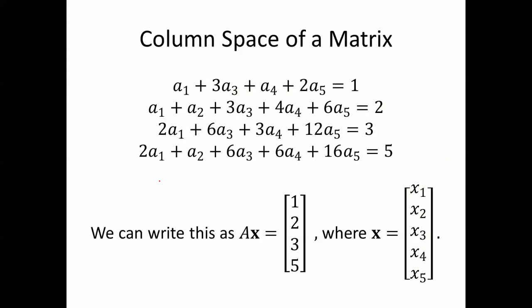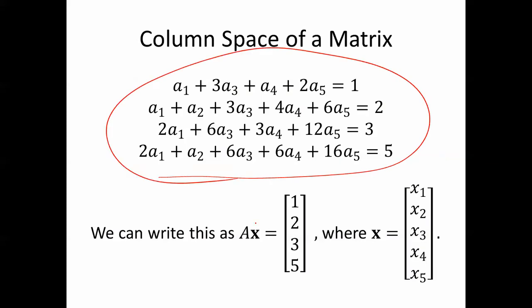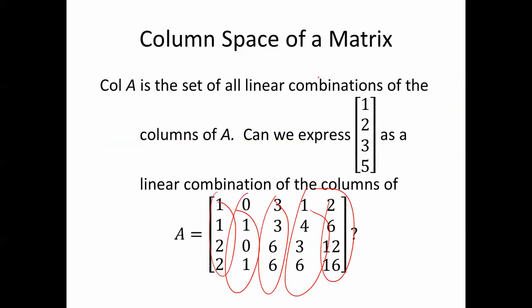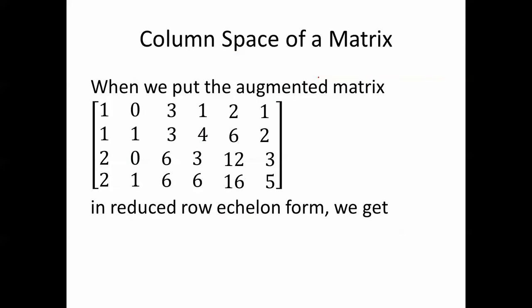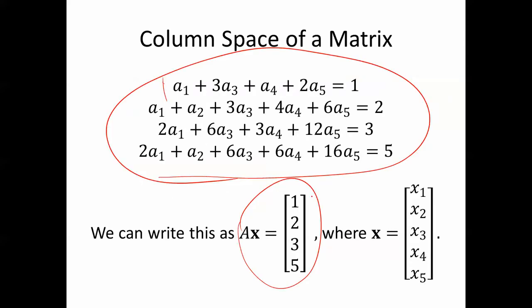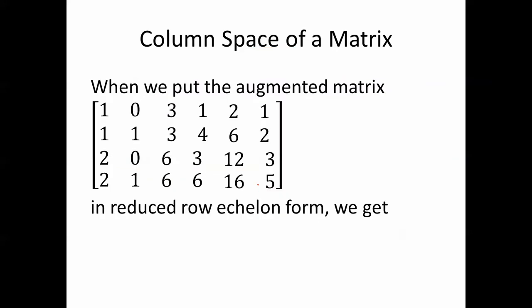We can write this as Ax equals (1, 2, 3, 5), where x equals (x1, x2, x3, x4, x5), and A is just that matrix we saw earlier. When we put that augmented matrix in reduced row echelon form — we're taking Ax equals (1, 2, 3, 5) and expressing it as an augmented matrix — we get this.